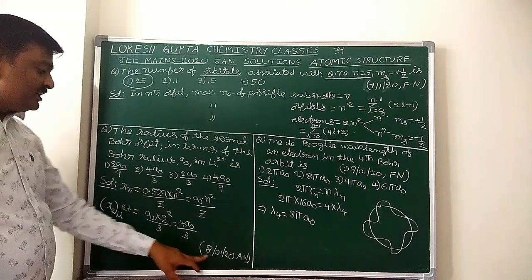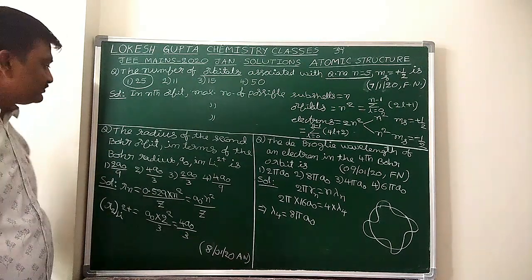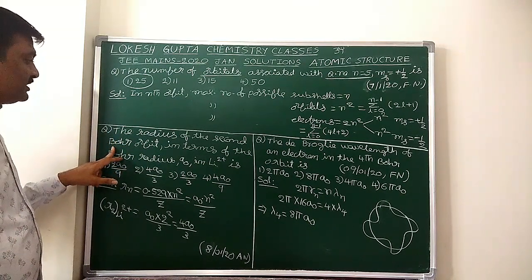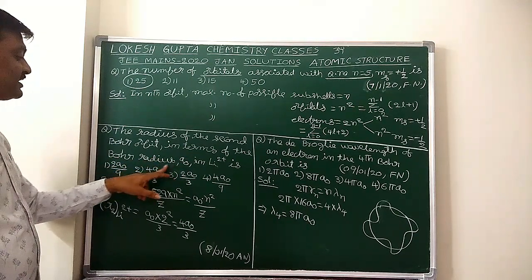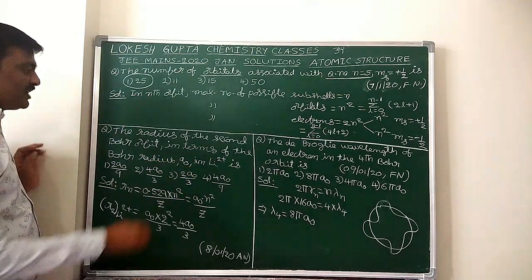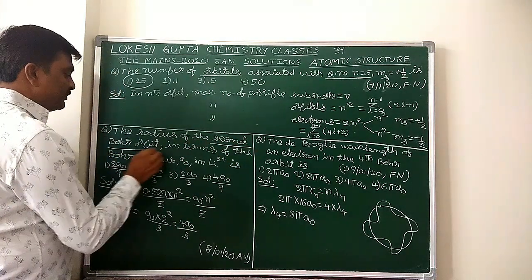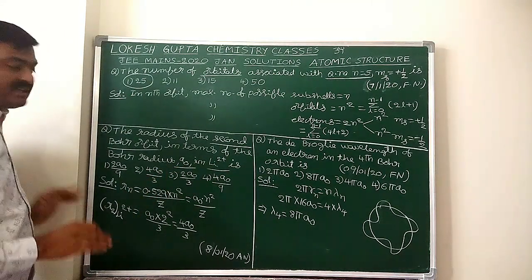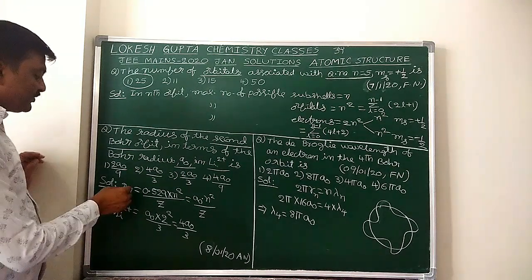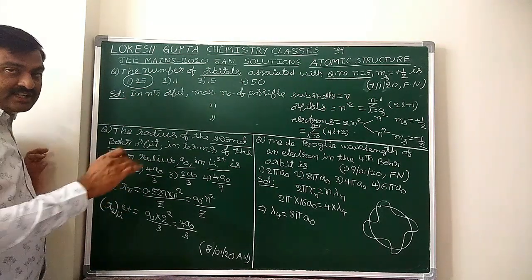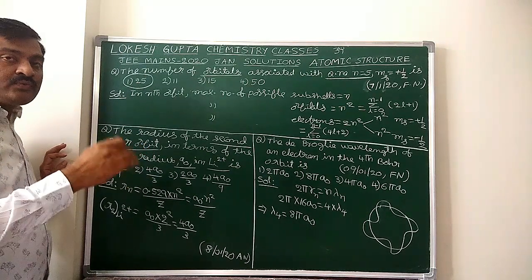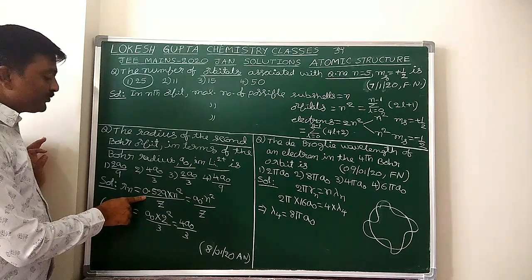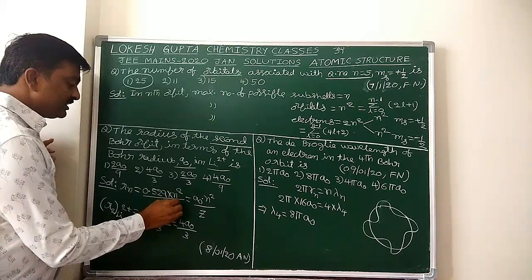This question is given in 8th January afternoon. The radius of the second Bohr orbit in terms of Bohr's radius A₀ in lithium 2 plus (Li²⁺). So what they want: the second Bohr orbit radius in Li²⁺ ion, in terms of Bohr's radius A₀.